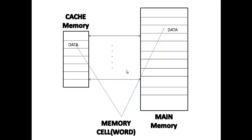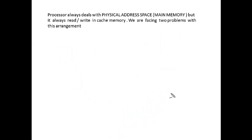Each and every memory cell is distinguished differently, meaning each memory cell has a unique identity. This identity is given by a number, and these numbers are called addresses. The address number is the facility by which we can digitally find a particular memory cell and access the required data.